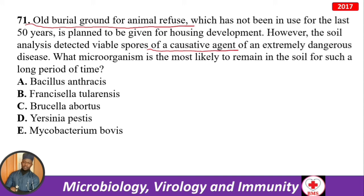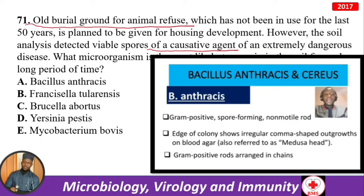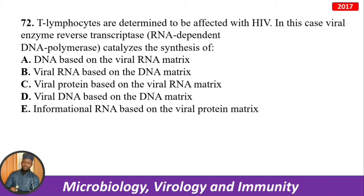Two lymphocytes are determined to be affected with HIV. The viral enzyme reverse transcriptase (RNA-dependent DNA polymerase) catalyzes the synthesis of what? HIV is an RNA virus — upon entering the host cell it must convert its RNA to DNA, reversing the process of transcription using reverse transcriptase. It synthesizes DNA based on the viral RNA matrix. HIV belongs to Retroviridae, is lymphotropic, has two copies of positive single-stranded RNA genome, reverse transcriptase, icosahedral symmetry with a conical capsid, and a spike lipoprotein envelope.